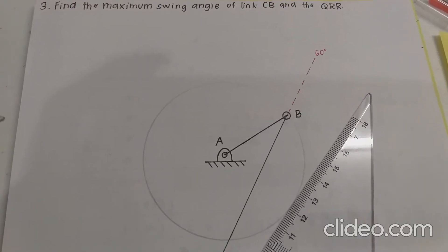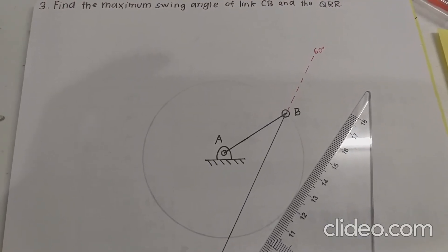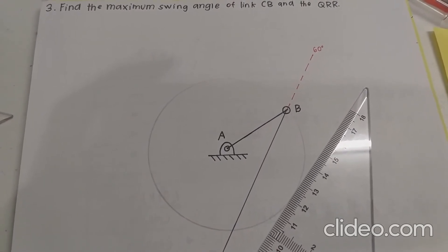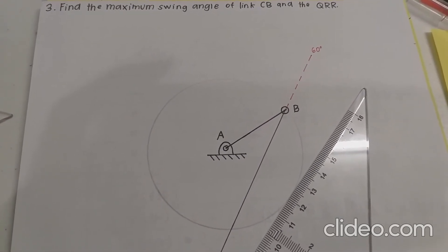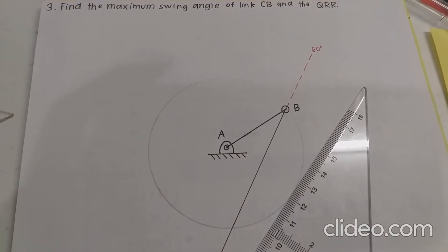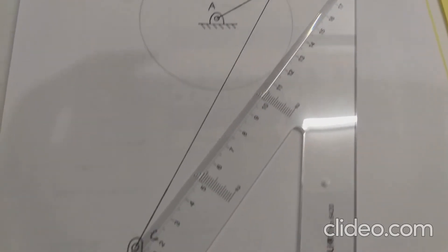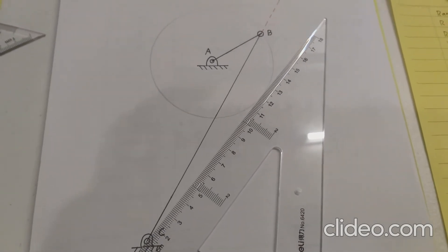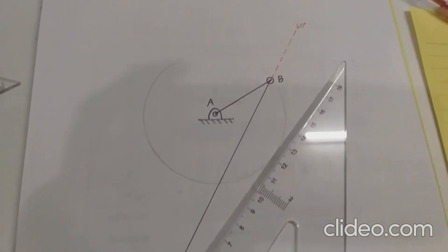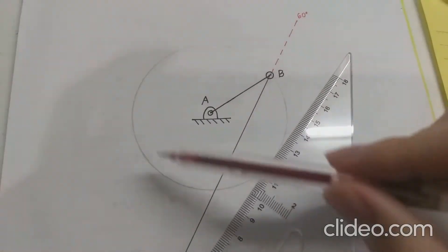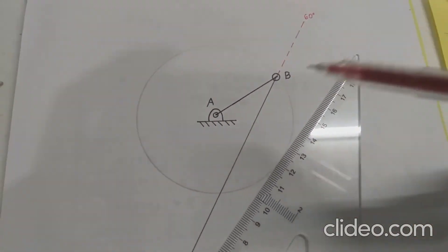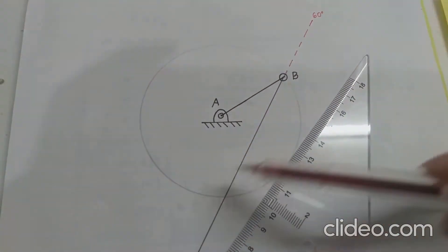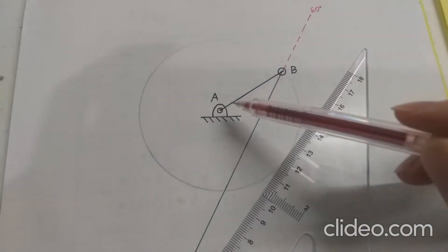So for the second problem, which I chose to solve, is the third item, which is to find the maximum swing angle of link CB in the quick return ratio. I've drawn here the figure. Basically, we know that this link AB fulfills Grashev's criterion, which means that the link AB can completely revolve around point A.